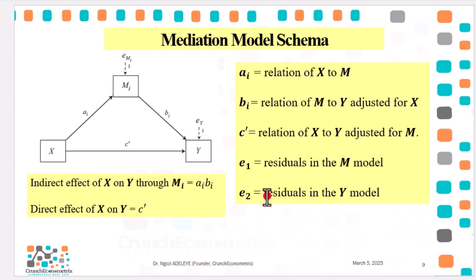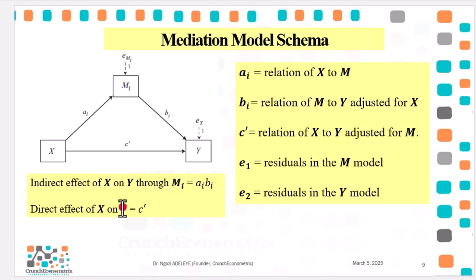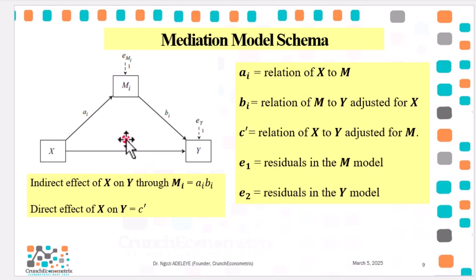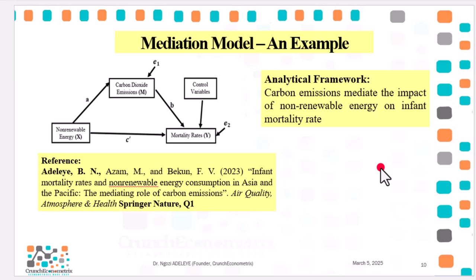Alpha I captures the relationship between X and M; beta I captures that of M and Y, adjusting for X; C prime captures the relationship between X and Y, while adjusting for M. The residuals are captured by E1 and E2. For the indirect effect, multiply alpha I by beta I to get the indirect effect of X on Y. For the direct effect, it is simply C prime.